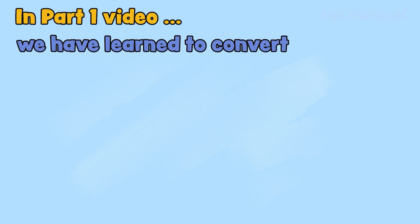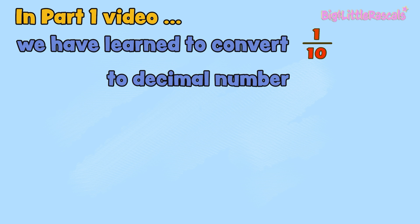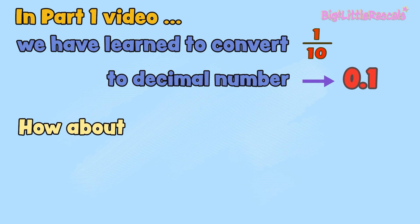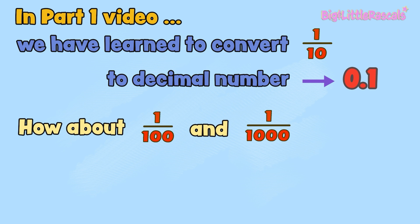In part 1 of our video, we learned that one-tenth converted to decimal number gives you 0.1. And now, how about 1 out of 100, or 1 out of 1,000? What are the decimal numbers for one-hundredth and one-thousandth?